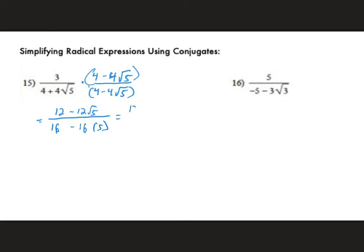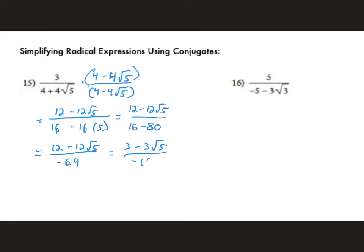Now clean up the result — it's going to get a bit ugly. The best we can do is factor out a common factor of 4 from the numerator and denominator. That's about as far as you should take it, because you've reached your goal of eliminating the radical from the denominator.